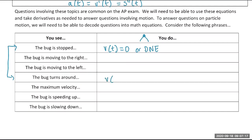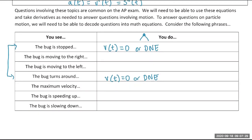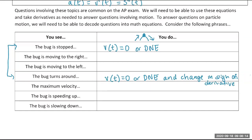Note that if your function looks like an upside-down absolute value function, a maximum can occur where the derivative does not exist. So the bug stops where velocity equals zero or does not exist. Additionally, there must also be a sign change in velocity — from positive to negative or negative to positive — for us to know the bug actually turned around, not just momentarily stopped.